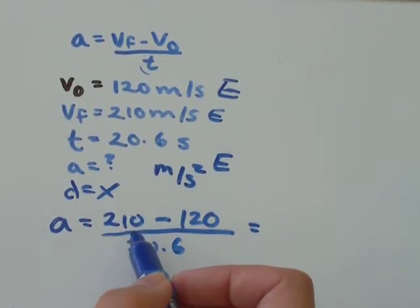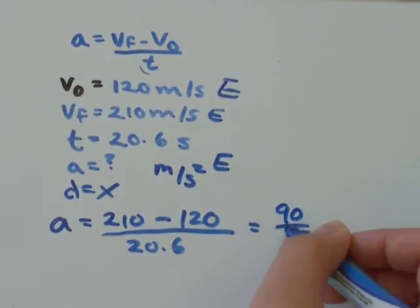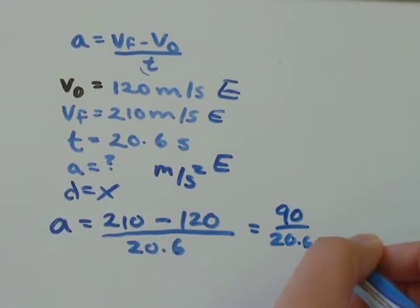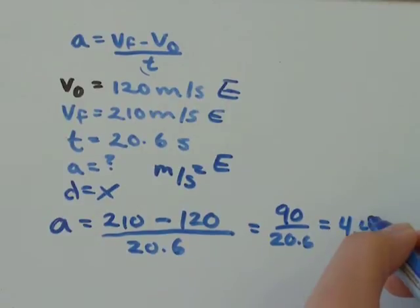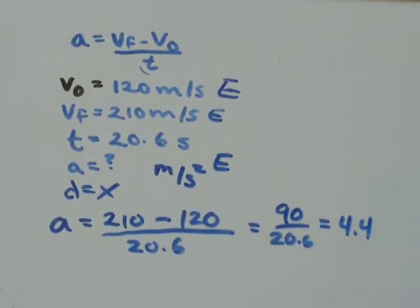On top, 210 minus 120, that's going to be 90, divided by 20.6. When I did that on my calculator, I got about 4.4.